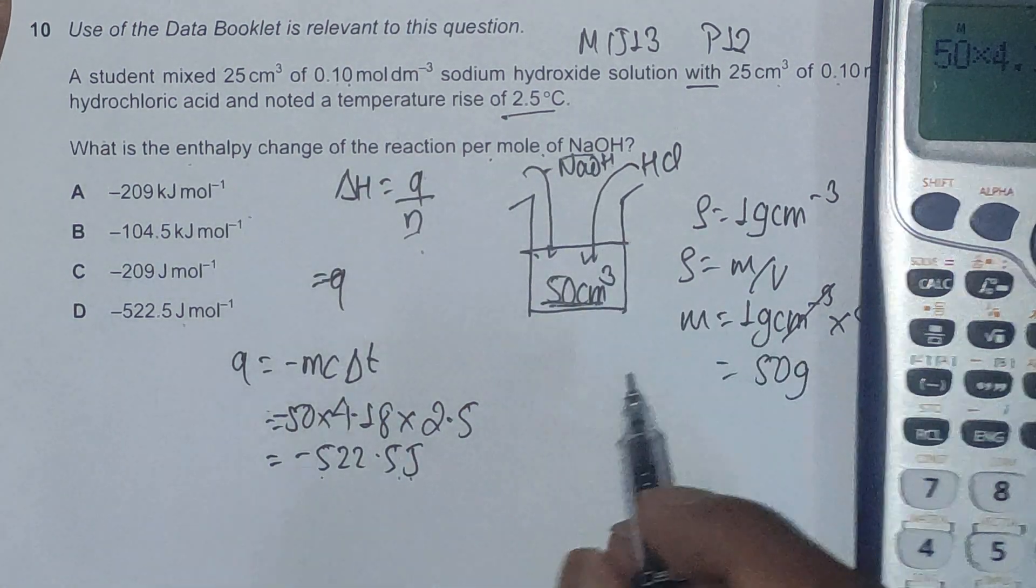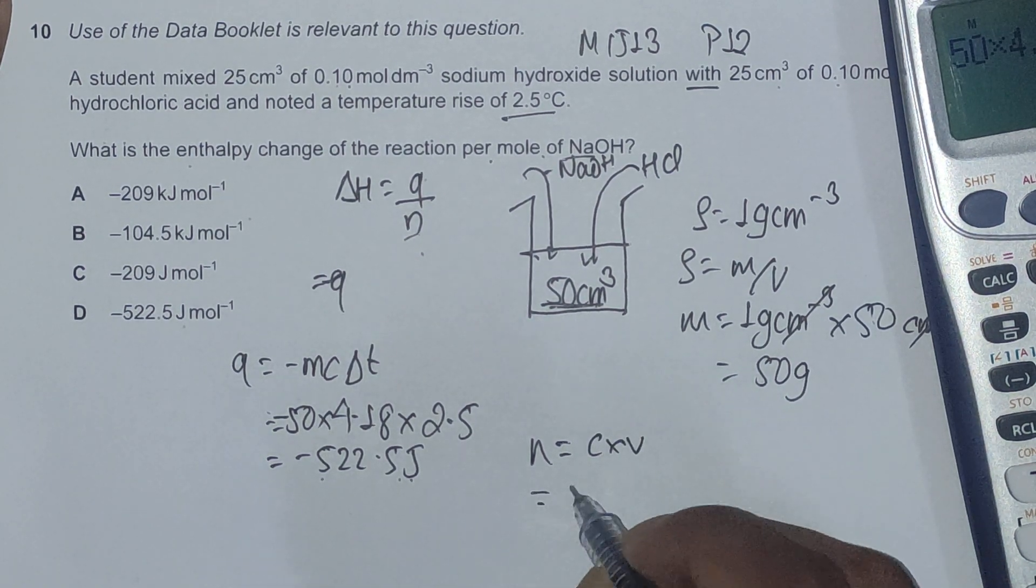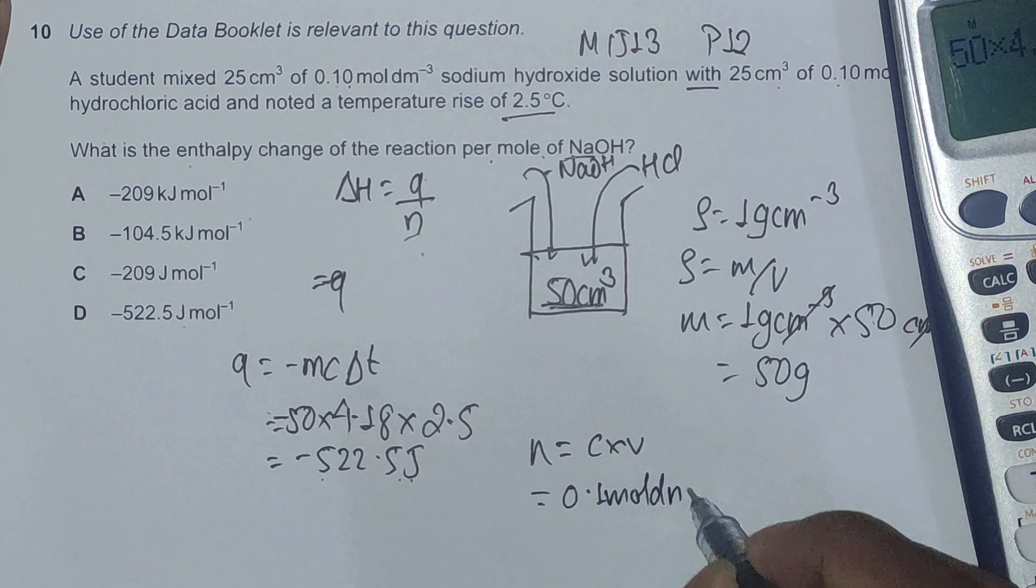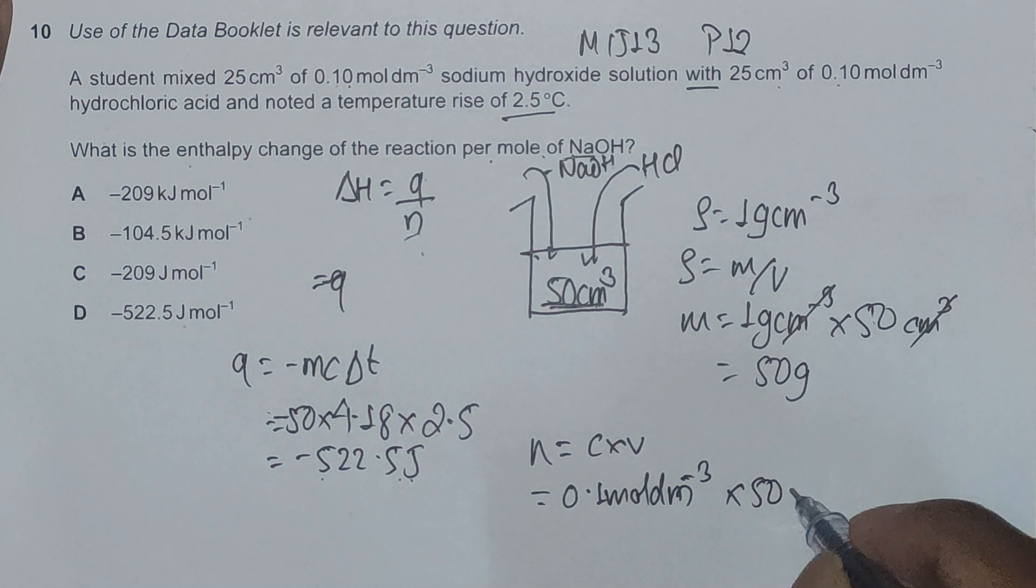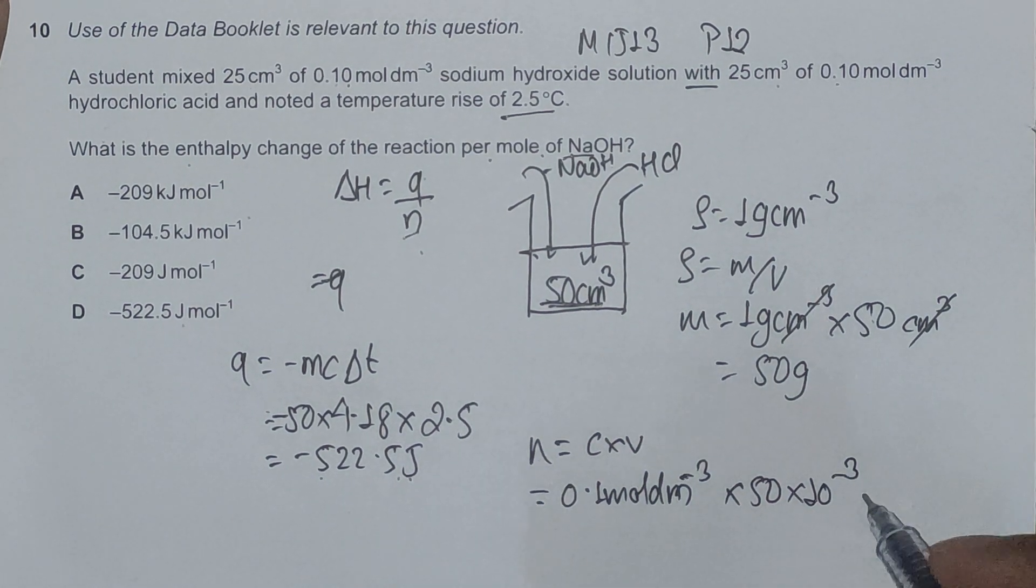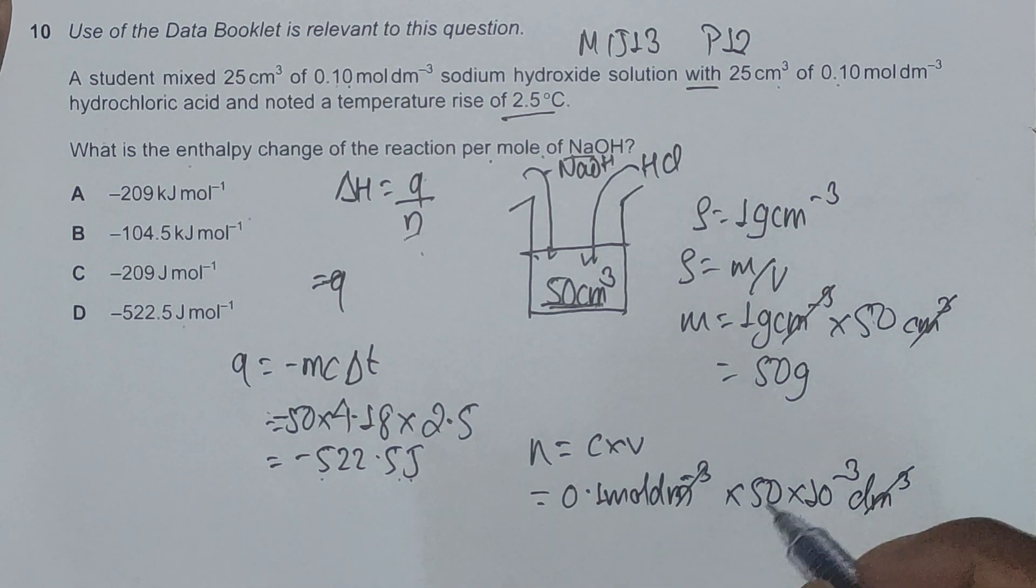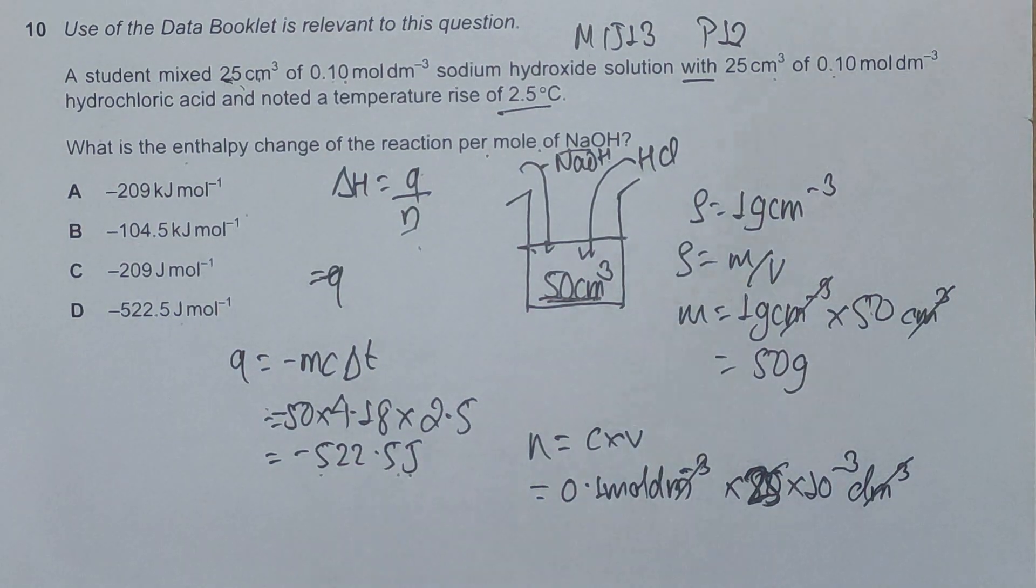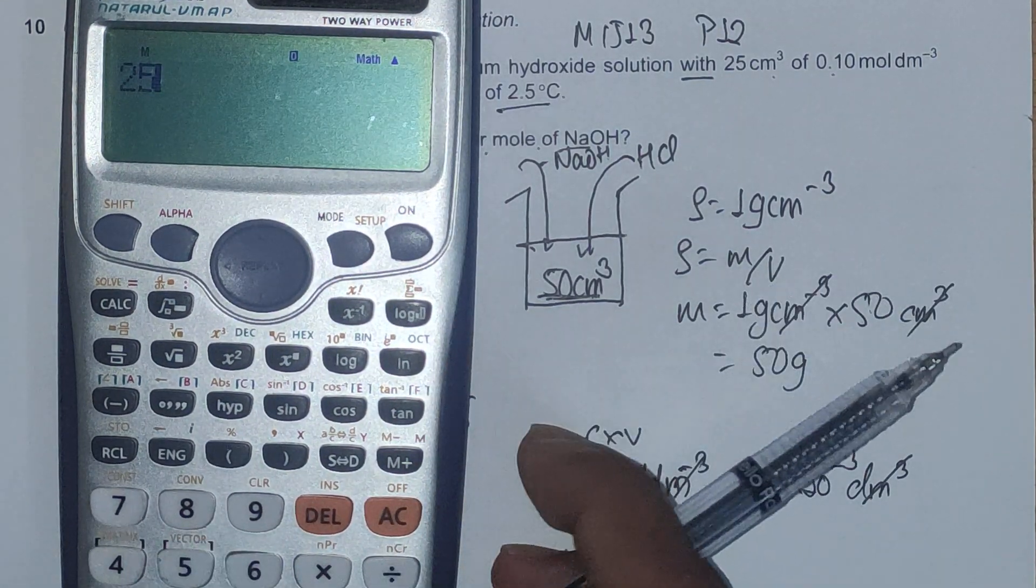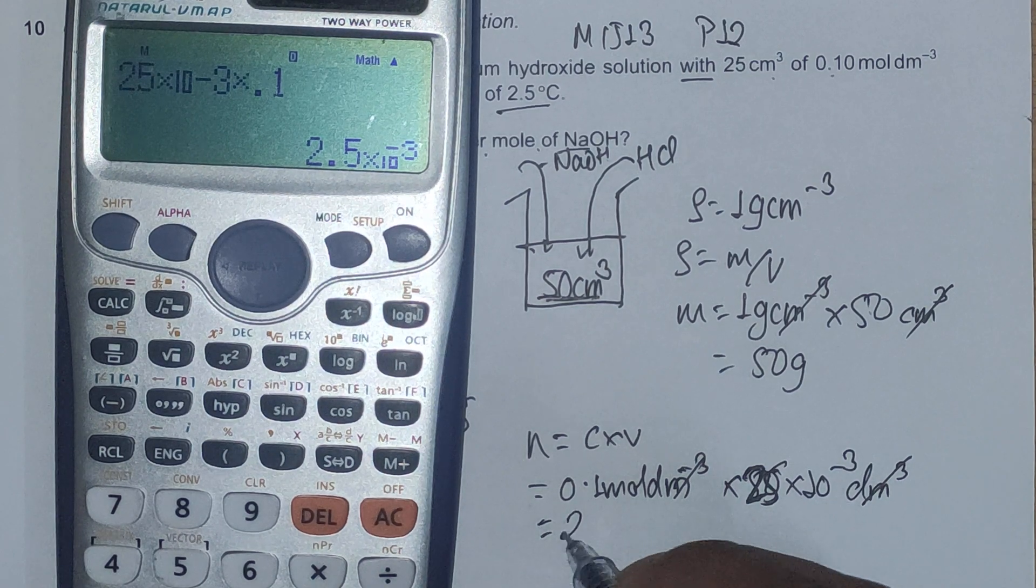Moles of NaOH is concentration multiplied by volume. Concentration is 0.1 moles per dm³ and volume is 25 cm³, and we have to convert it into dm³ by multiplying by 10 to the minus 3 or dividing by 1000. The volume of NaOH is 25 cm³. If we multiply 25 times 10 to the minus 3 times 0.1, we get 2.5 times 10 to the minus 3.